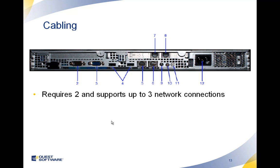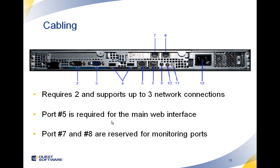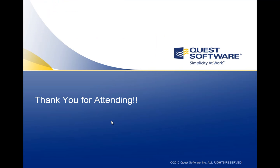Looking at the back of the box, you're going to require 2 but we support up to 3 network connections. Port number 5 is required for the main web interface, where you'll access the box for configuration and cabling. Ports 7 and 8 are where you plug your other cables for network monitoring. Besides those network cables, you'll need port number 12 for power, port number 2 which is your monitor, and port number 4 for your keyboard. There will be more on this after you receive your appliance and get the next instructional video. Thank you very much for attending.